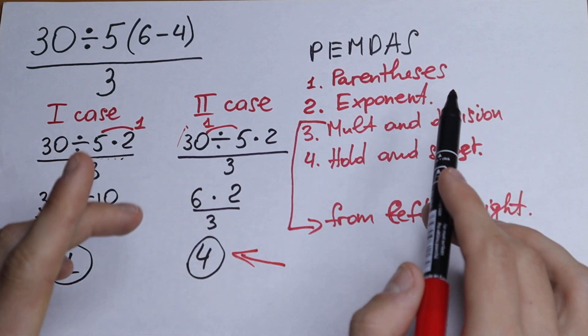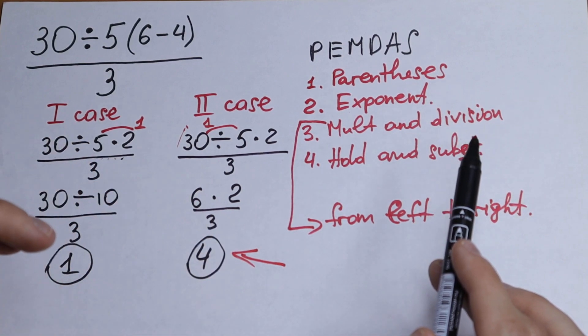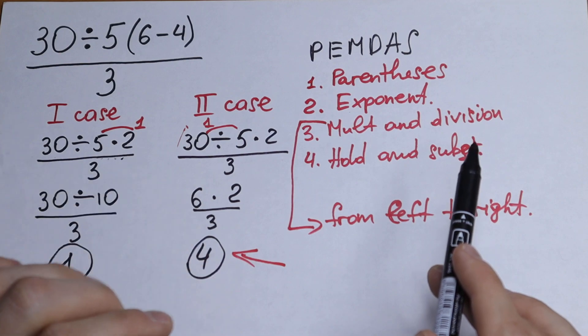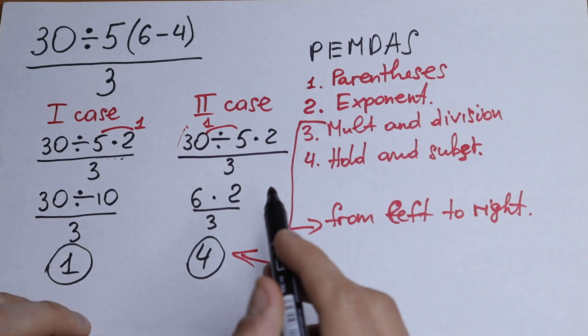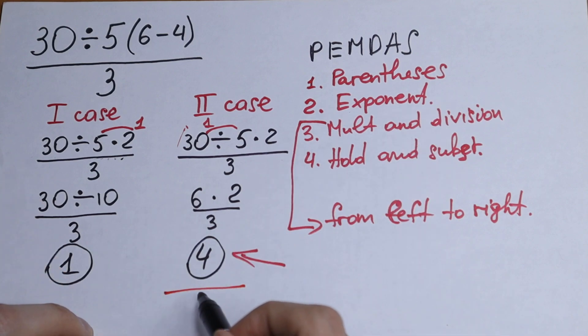So the order of operation is the rule that tells the correct sequence of steps for evaluating a math expression. We can remember the order using PEMDAS. So for me, the answer is 4.